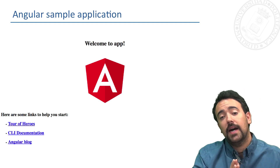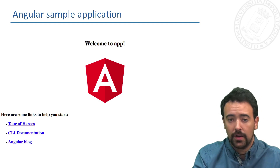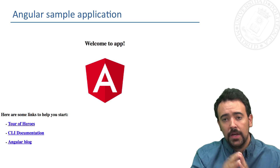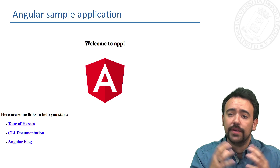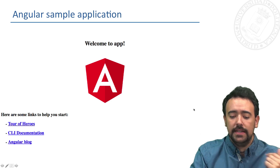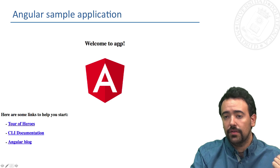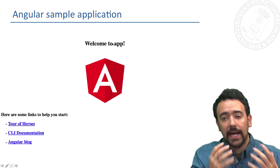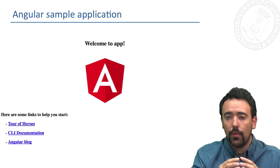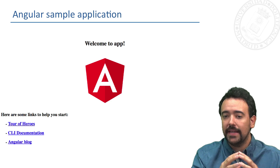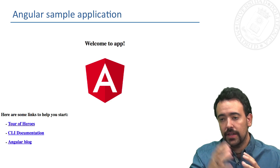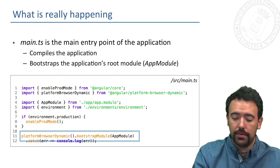When we create a sample application using the command line interface tools that Angular provides to us, we can see that it renders a welcome application with a title that it gets from the logic of the component. But what is actually happening? How is Angular building our application to finally display the template of this main component in the web page, in the web browser?